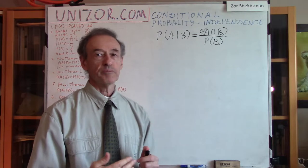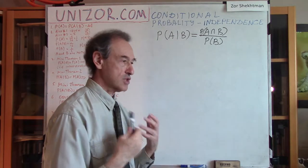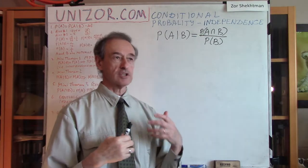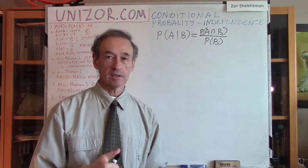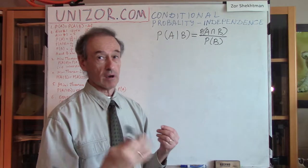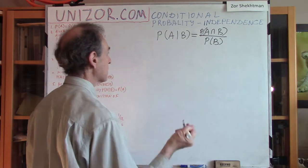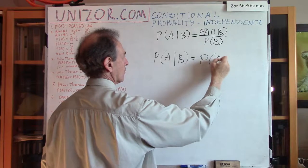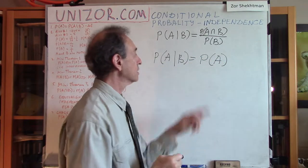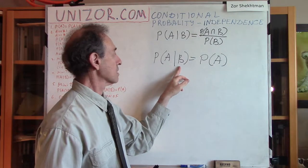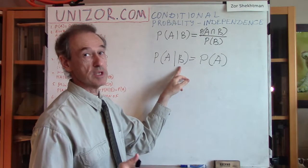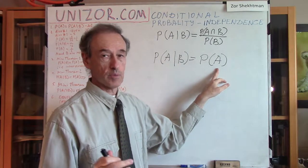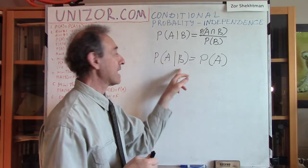Now let's talk about what events we can call independent. From just the meaning of the word, if A is to be independent of B, it means the chances for event A to occur should not depend on whether event B occurs or doesn't occur. So the definition of independence is: if the conditional probability of A given B is the same as the unconditional probability of A, regardless of whether B occurs, then A and B can be called independent.